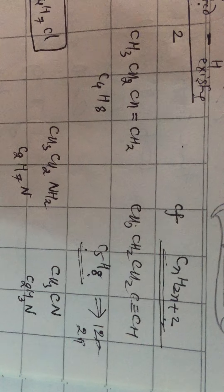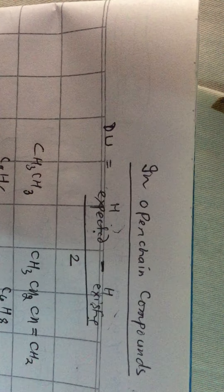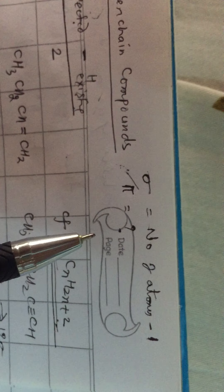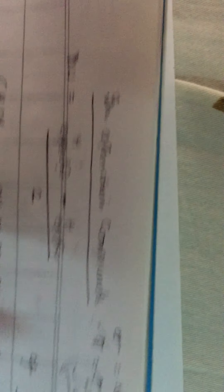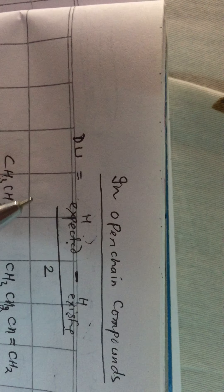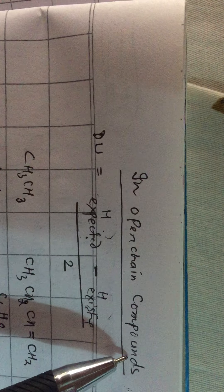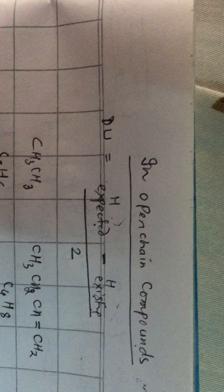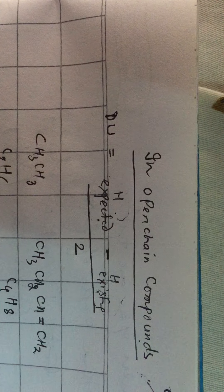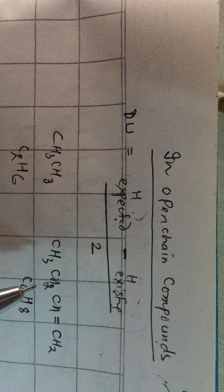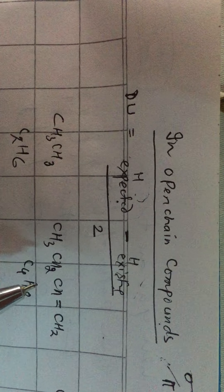In open chain compounds, always apply this formula: number of sigma bonds equals number of atoms minus 1, and number of pi bonds equals the degree of unsaturation. In open chain compounds, degree of unsaturation indicates the number of pi bonds.